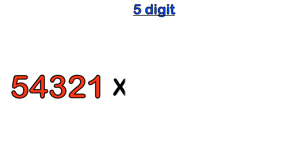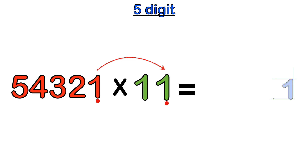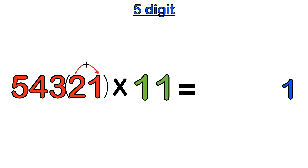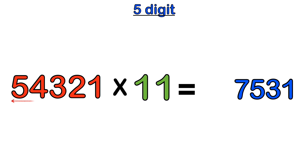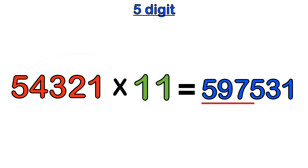Let's take a look at five digits — 54,321 times 11. Start with the last digit: one times the last one in 11 gives us one. Move one space to the left: two plus one gives us three. Move left again: three plus two gives us five. Move left: four plus three gives us seven. Move left: five plus four gives us nine. Then multiply the first digit, five, by the first one in 11 to get five. So the answer is 597,531.